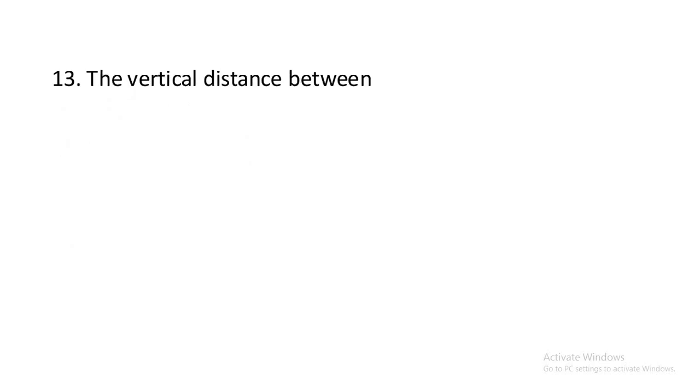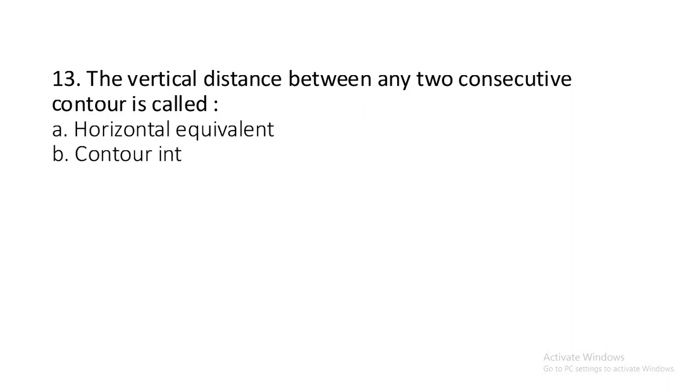Question number thirteen: The vertical distance between any two consecutive contours is called horizontal equivalent, contour interval, contour gradient, or reduced level? It is contour interval.